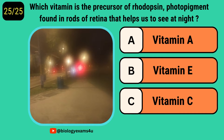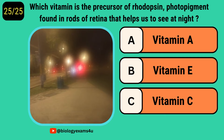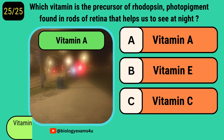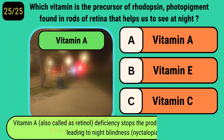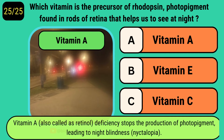Which vitamin is a precursor of rhodopsin, the photopigment found in rods of the retina that helps us to see at night? The answer is vitamin A, also called retinol. Its deficiency stops the production of photopigment, leading to night blindness or nyctalopia.